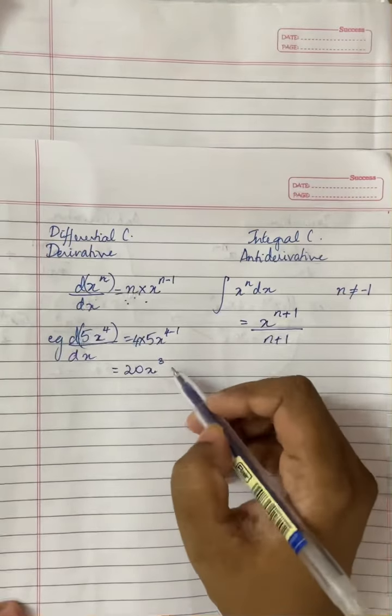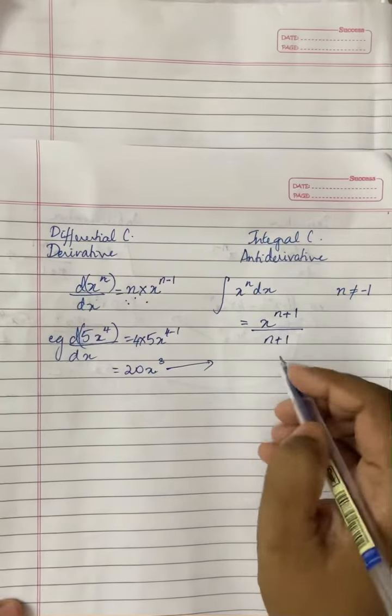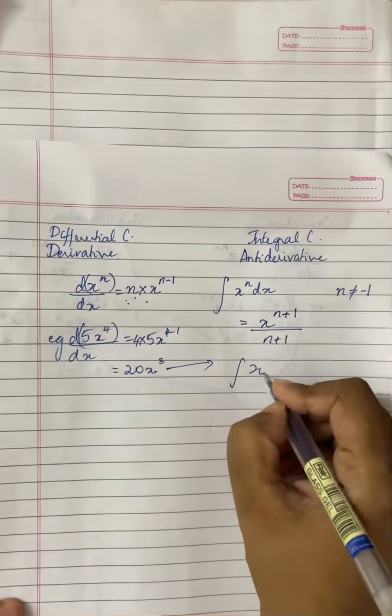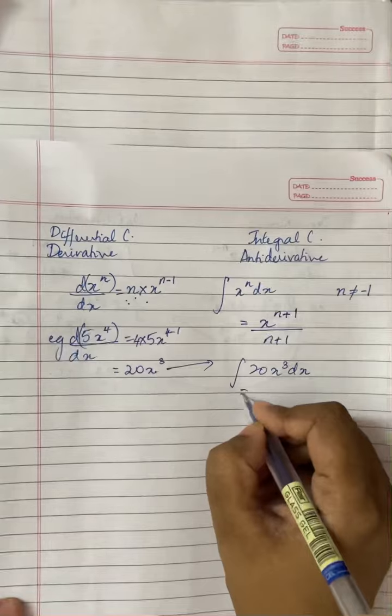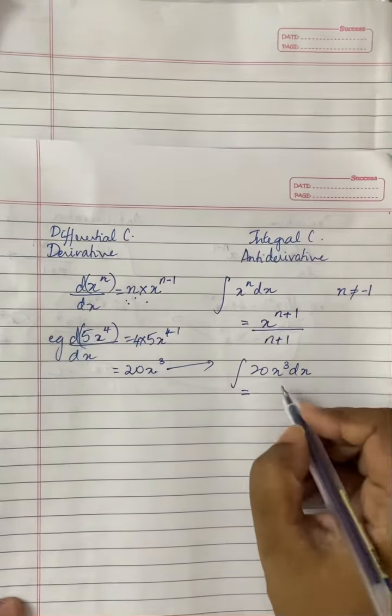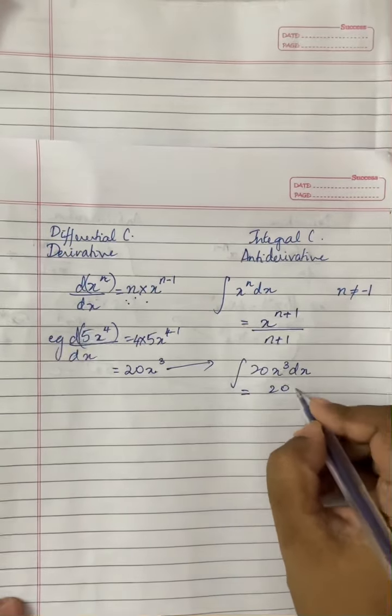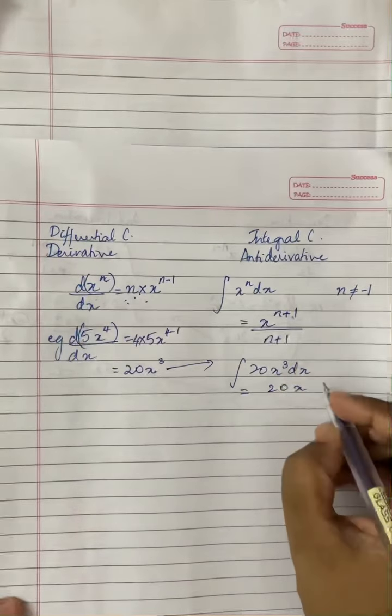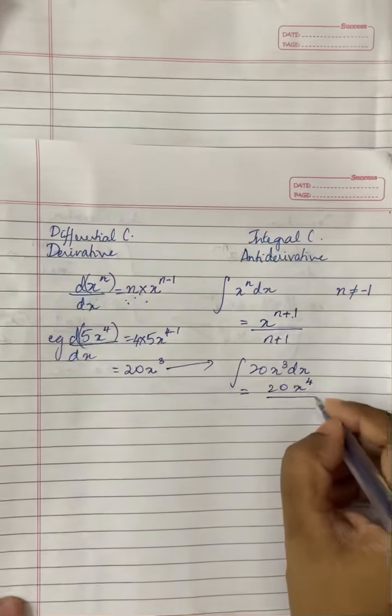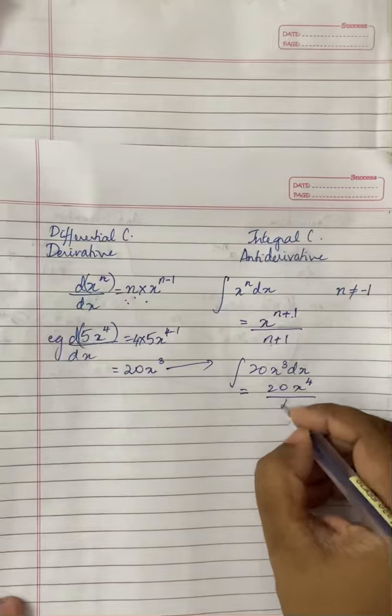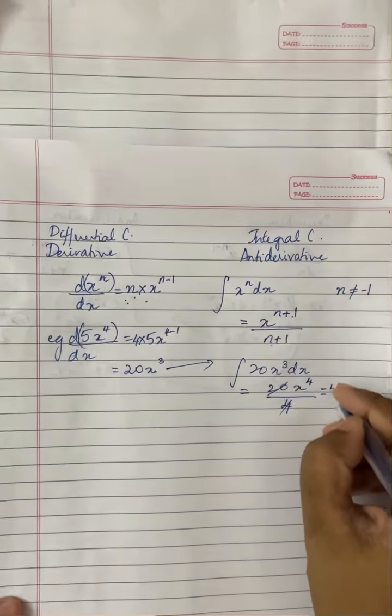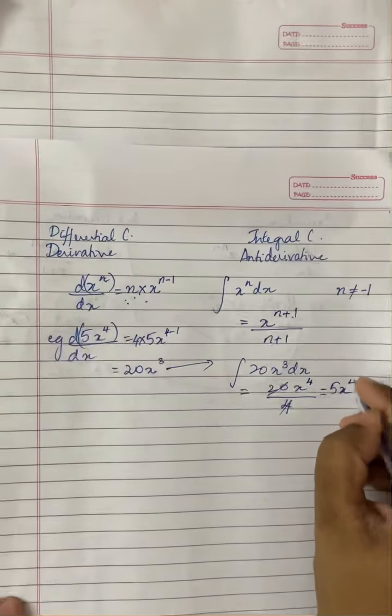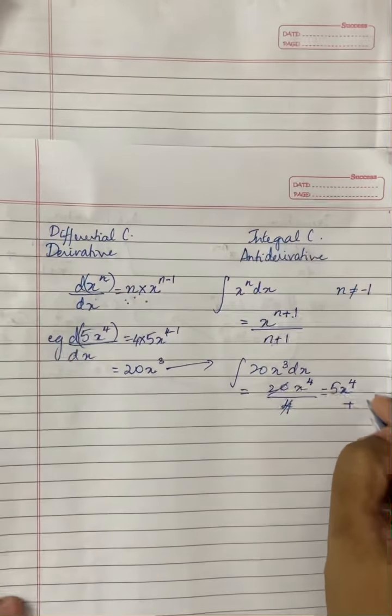So looking at an example, let us take this and integrate it. 20x cube dx on integration, what happens to it? 20, the x power is increased, so becomes 4 and divided by the increased power, cancels away to give you 5x power 4 with a c.